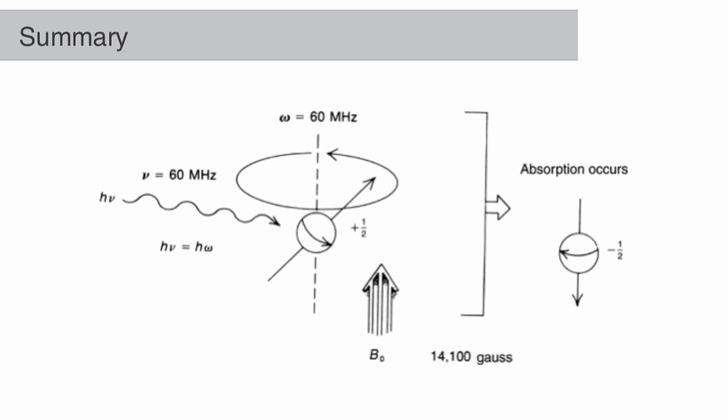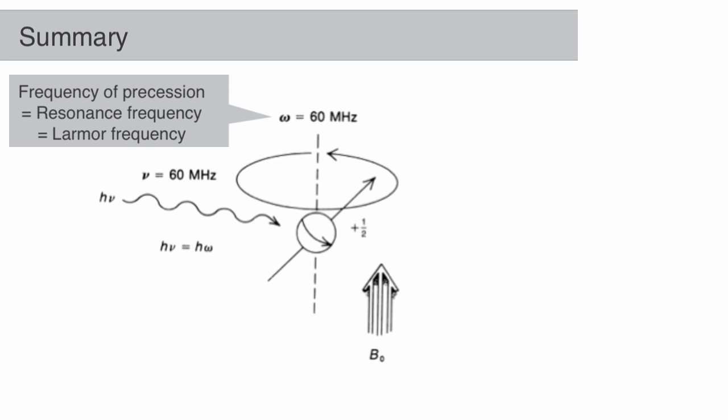In summary, the chemical shift of a nucleus represents the precessional frequency of that nucleus. The precessional, or resonance, or Larmor frequency, is affected by three things. The spectrometer's strength. The resonance frequency increases in a stronger magnet.